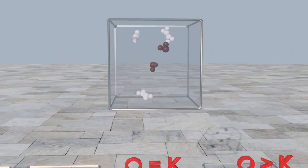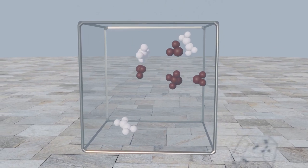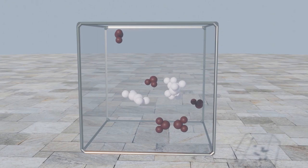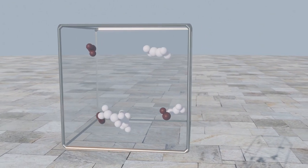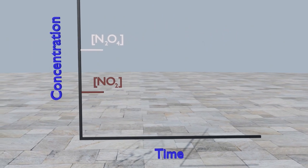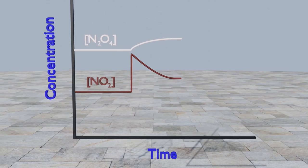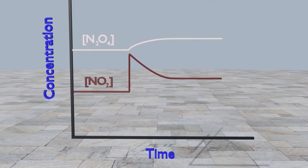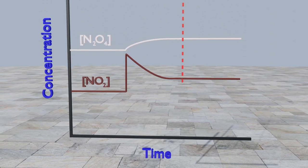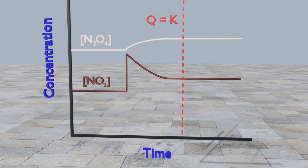Let's take the mixture that is at equilibrium and add some nitrogen dioxide. This disrupts the equilibrium and the reaction quotient no longer equals the equilibrium constant. The reaction shifts right to remove some of the added reactant. On a concentration versus time graph, this addition would appear as a spike. The concentration of the nitrogen dioxide would decrease twice as much as the concentration of dinitrogen tetroxide would increase, until equilibrium is re-established and the reaction quotient is once again equal to the equilibrium constant.